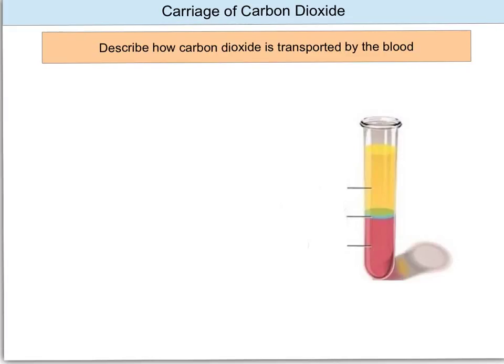Describe how carbon dioxide is transported by the blood. If I take a test tube and take a blood sample and put it inside the test tube, I can centrifuge it. The centrifuge is basically a really large spinning machine, and it spins the blood at around 2,000 revolutions per minute. We see that blood is actually made of three different, distinct layers. The first layer here are the erythrocytes, or red blood cells.